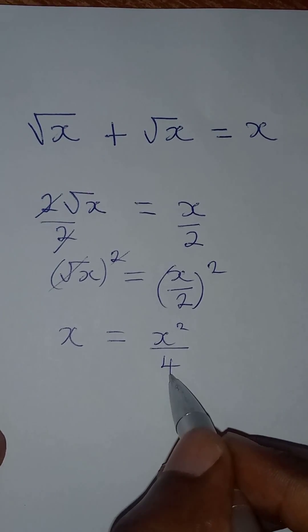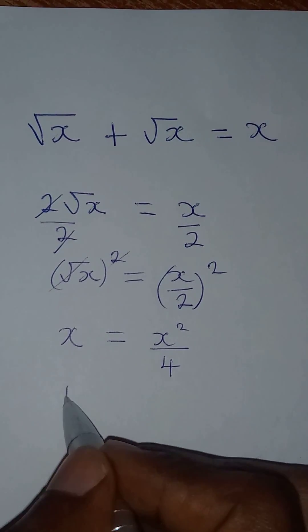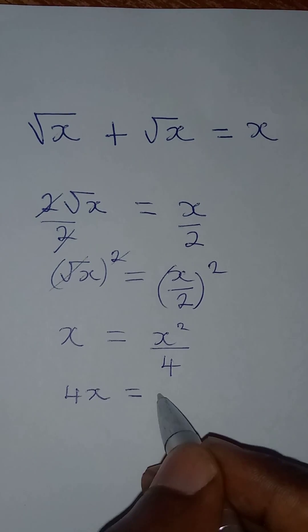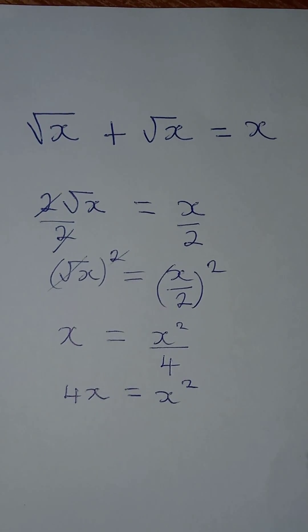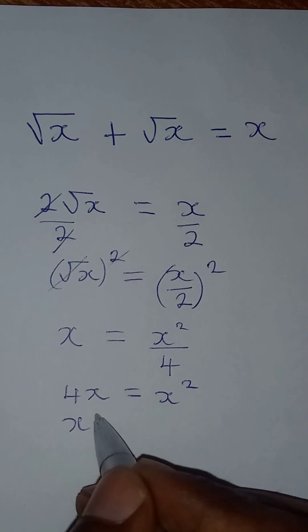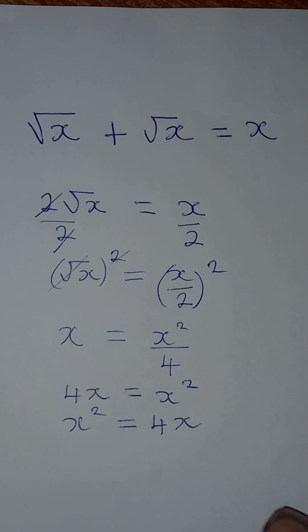That will give us four. Then I can simply cross multiply. So I have 4x equal to x squared. Or this is better written as x squared equal to 4x.